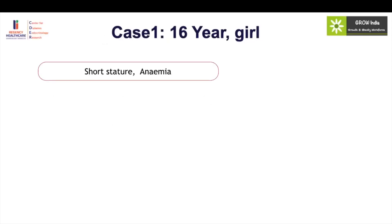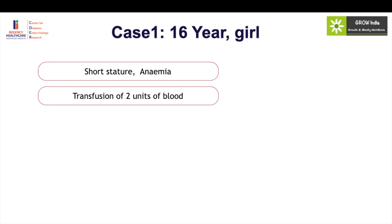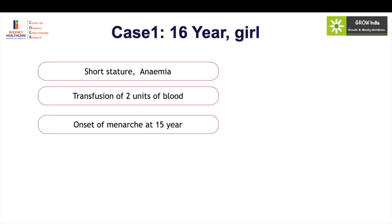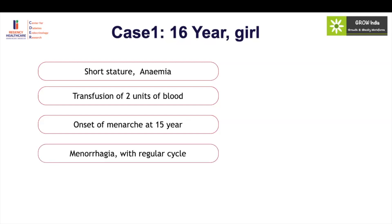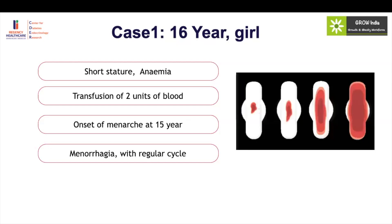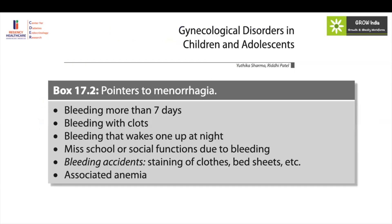This is a 16-year-old girl who presents with short stature and anemia to a pediatrician and endocrinologist. She has already had two units of blood transfusion and her onset of menarche is at 15 years. Clinically, there is only short stature and anemia. If objective questions regarding her periods are not asked, mild cases of anemia and moderate cases of menorrhagia will be missed. This girl actually had regular cycles with heavy periods and did not think that was a cause of her anemia. So it is very important to actively ask about the kind of periods she has.